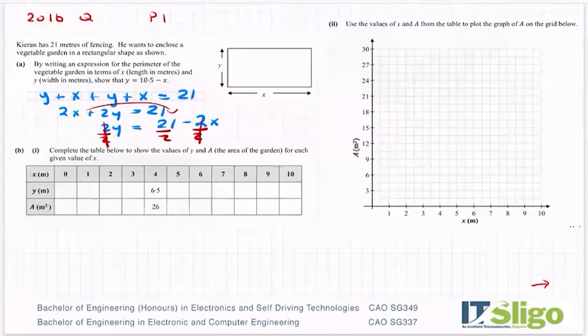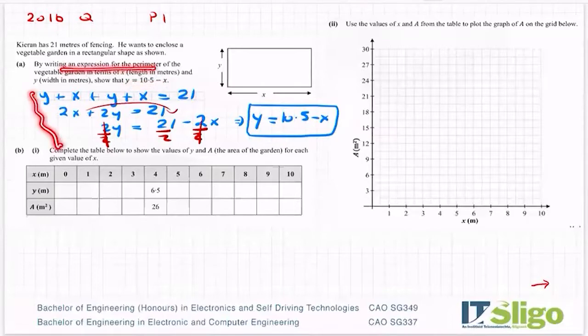So let's divide across by 2. Cancel, cancel, and I get y being equal to 21 over 2 is 10.5 minus x. So sometimes you don't see where this is going, you have to do what they tell you and hope that the answer jumps out at you at some stage.